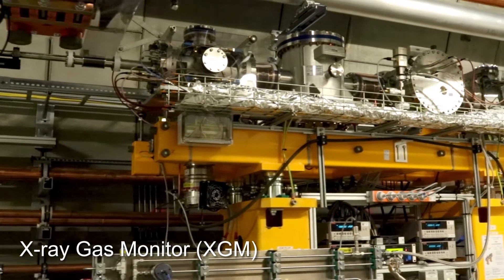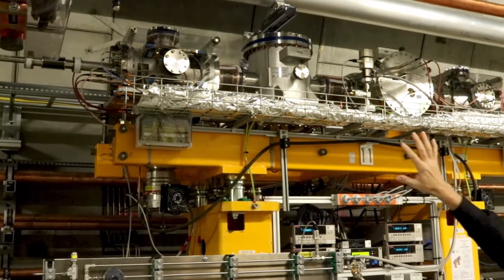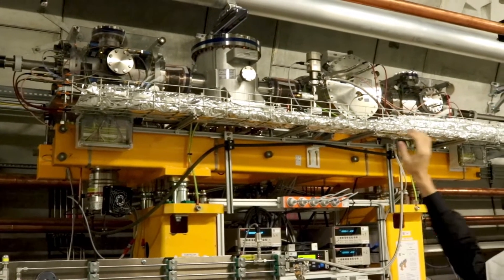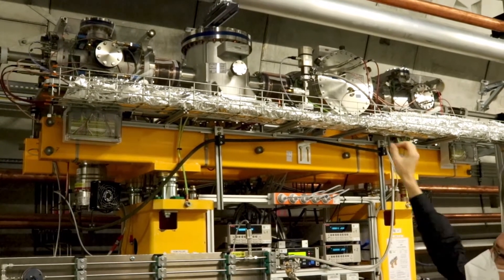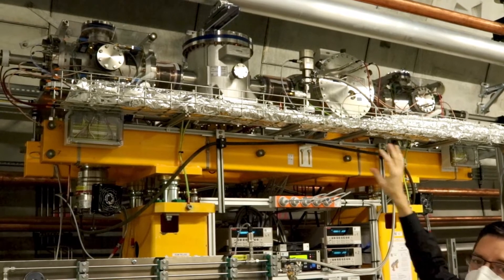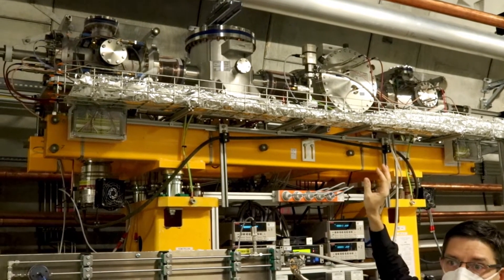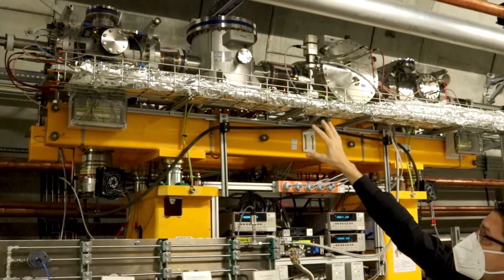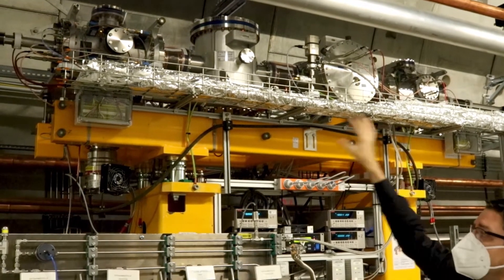There are four chambers up here, vacuum chambers. Two of them are for X direction, two of them for Y direction, rotated by 90 degrees. Each of these chambers delivers information about the pulse energy, and we get the beam position in X and Y.